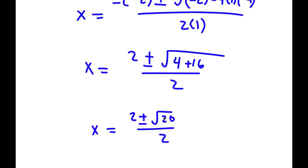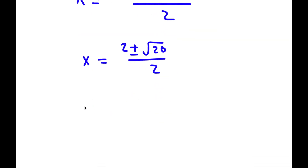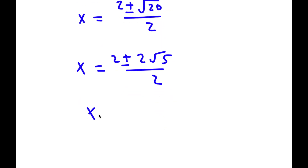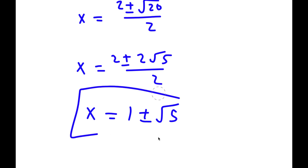The square root of 20 is the same as 2 root 5, so I have x equals (2 plus or minus 2 root 5) over 2. Dividing both terms by 2, I get x equals 1 plus or minus the square root of 5. These are my two answers.